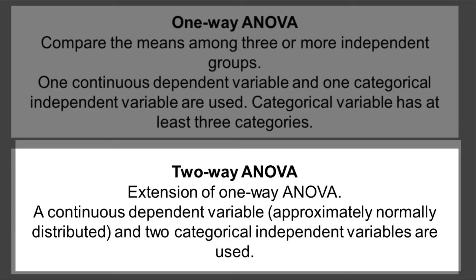Then you have a two-way ANOVA, which is an extension of a one-way ANOVA. In contrast to the one-way ANOVA, you can have two categorical independent variables.